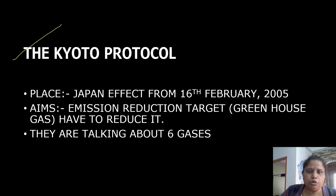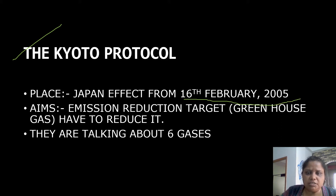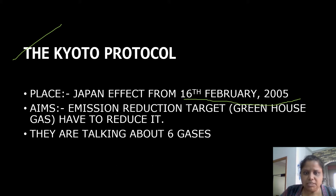The Kyoto Protocol — held in Japan, it came into effect on 16 February 2005. The aim was an emission reduction target, meaning greenhouse gases should be reduced. The main motto was to reduce greenhouse gas emissions, and this was to be done by every country.